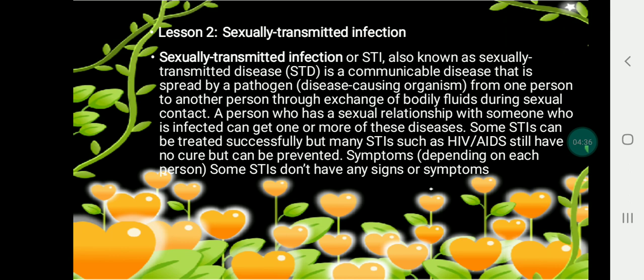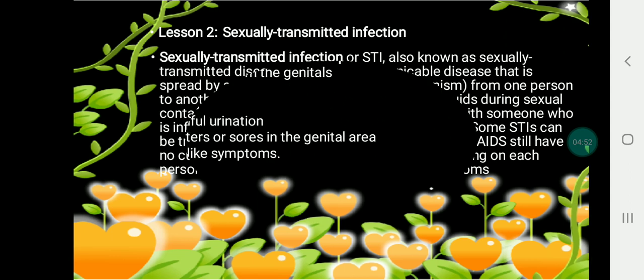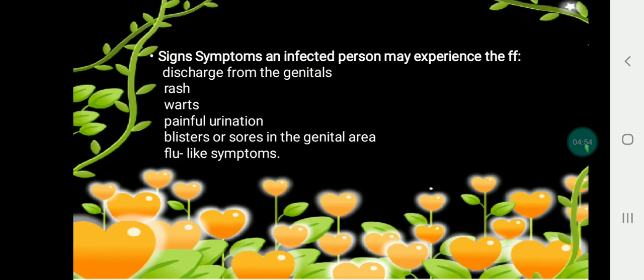Some STIs can be treated successfully, but many STIs such as HIV or AIDS still have no cure, though they can be prevented. Symptoms vary depending on each person, and some STIs have no signs or symptoms at all. Signs an affected person may experience include: discharge from the genitals, rash, warts, painful urination, blisters or sores in the genital area, and flu-like symptoms.